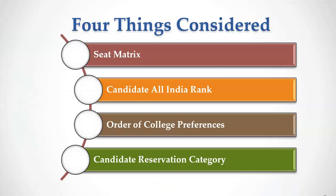MCC does online allotment of MBBS and BDS seats based on four factors: the seat matrix, the All India rank of the candidates, the order of preferences of colleges, and the reservation category of the candidate.